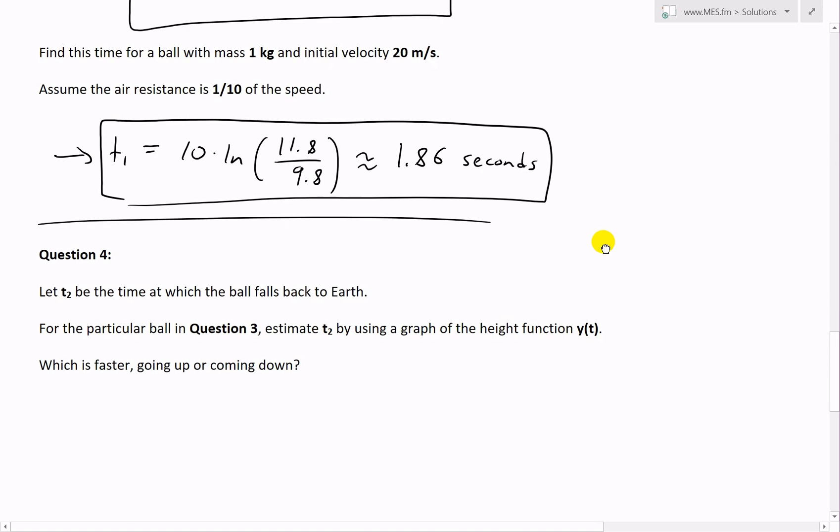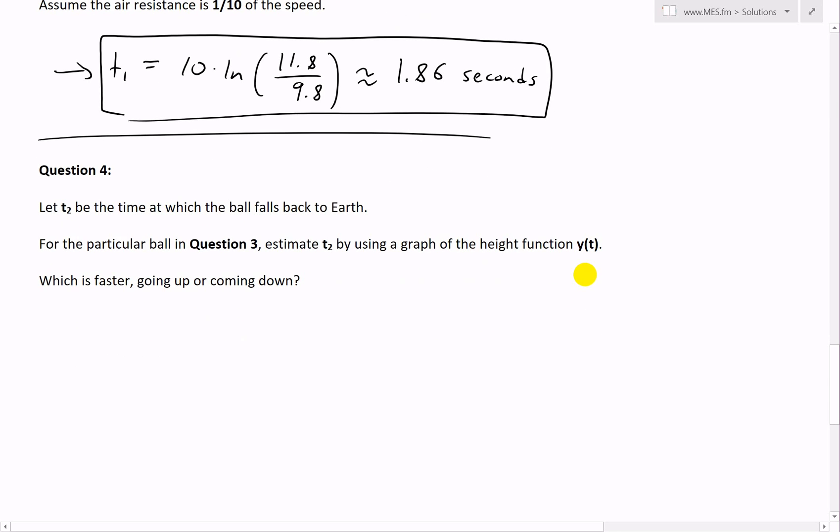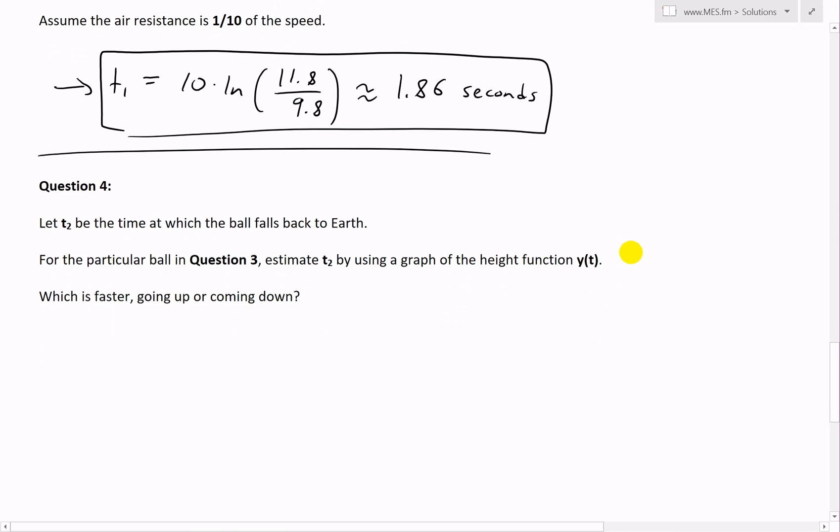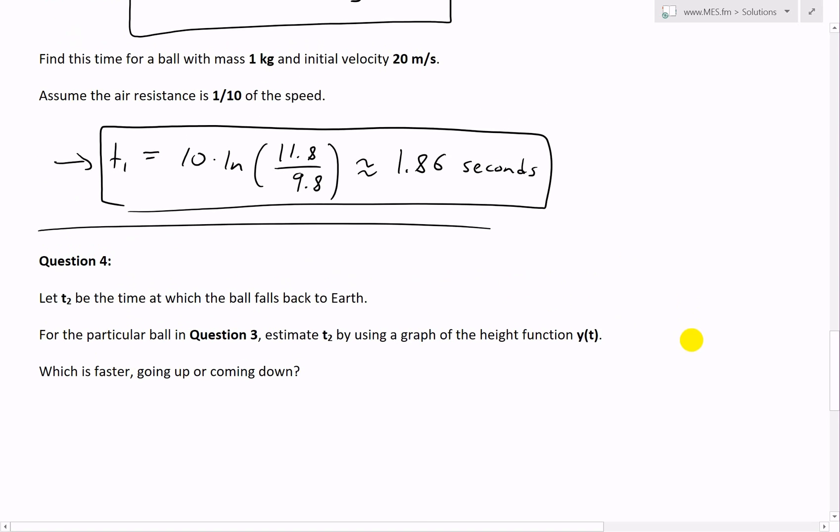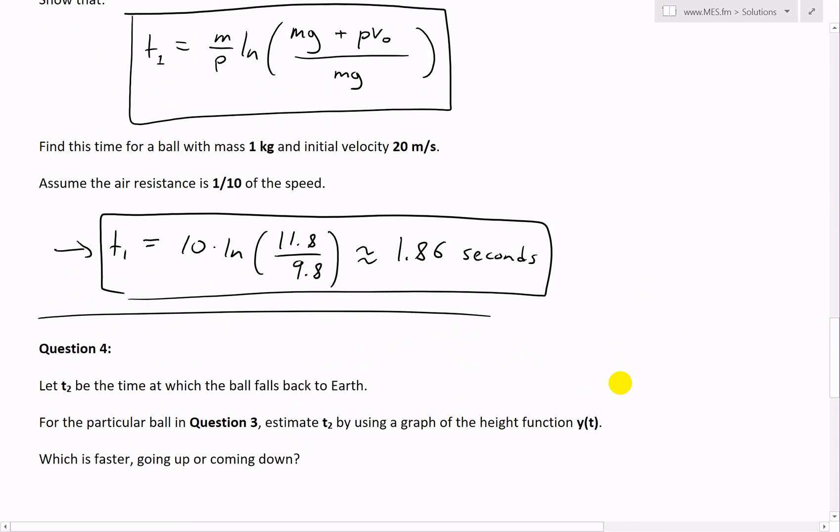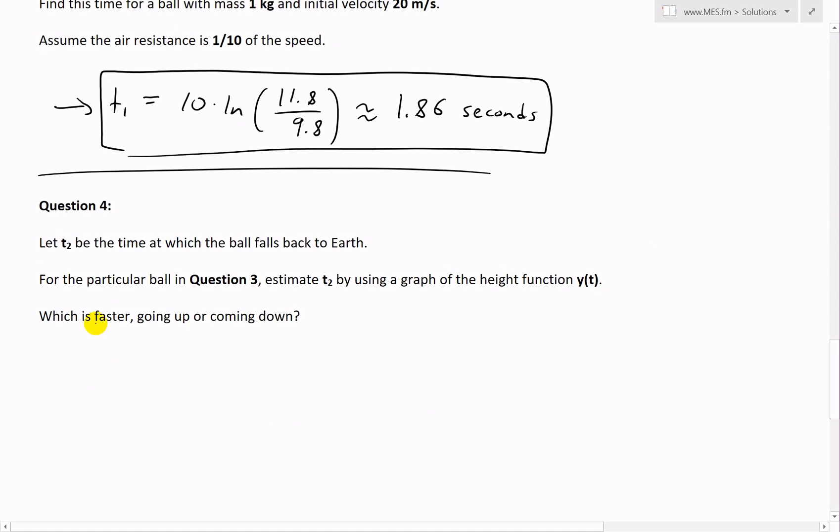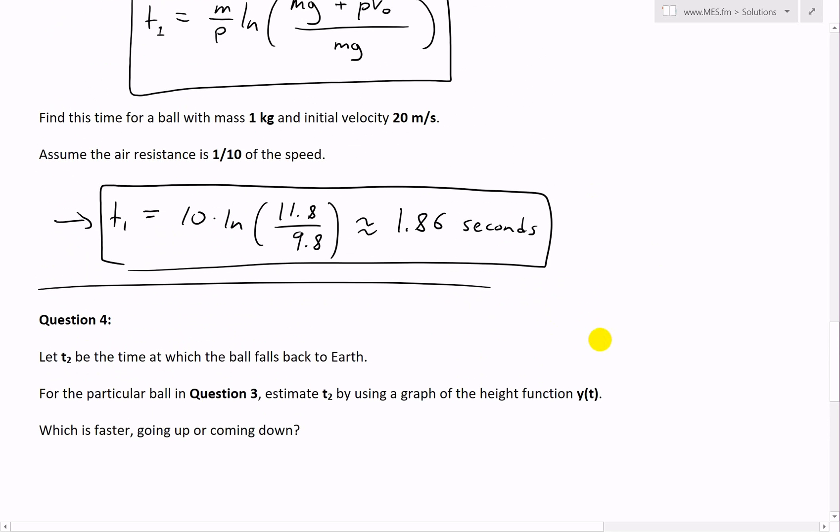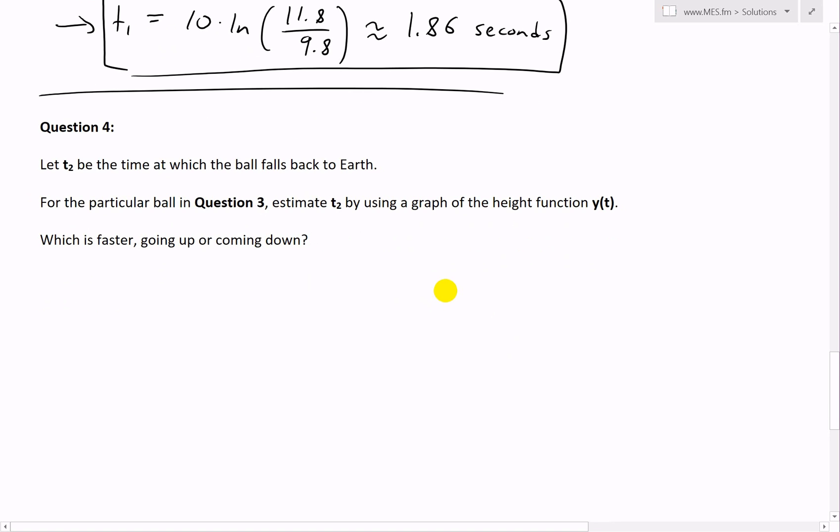Question four states: let t2 be the time at which the ball falls back to earth. For the particular ball in question three, estimate t2 by using a graph of the height function y(t). The reason we're estimating using a graph is that it's impossible to solve explicitly for t2. And then the question is, which is faster, going up or coming down?